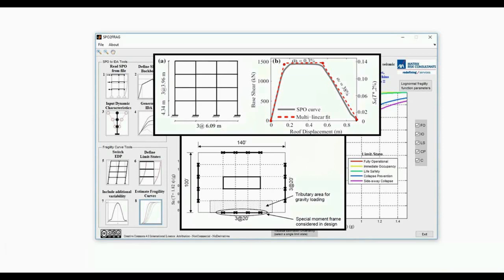The four-story plane perimeter frame highlighted was modeled using the OpenSees finite element platform. We then ran pushover analysis of the frame using a first-mode lateral load distribution. The resulting curve is also shown in the figure.